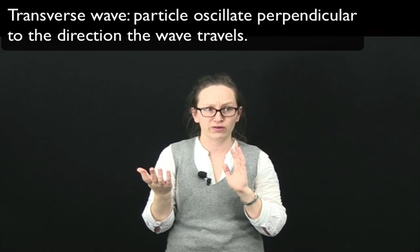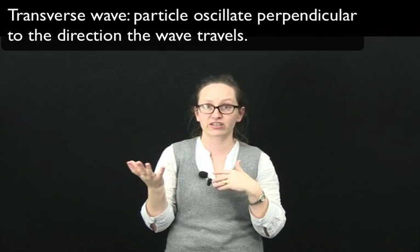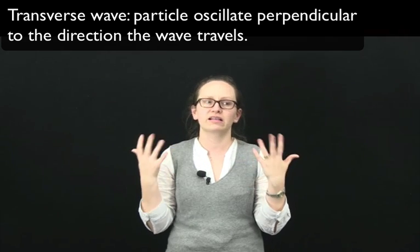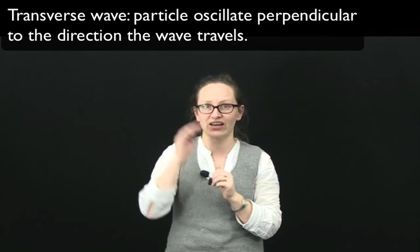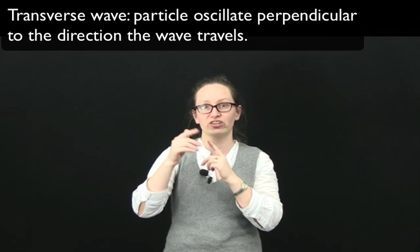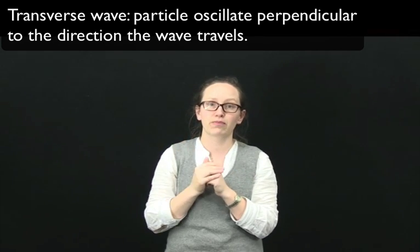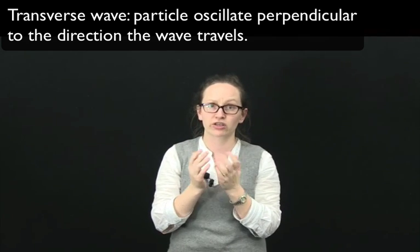So examples of transverse wave include waves on a string or electromagnetic waves. In electromagnetic waves, it's actually the electric and magnetic fields oscillating in a direction perpendicular to the direction the wave is travelling.